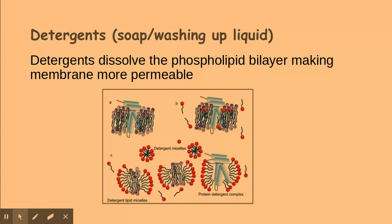Detergents are another factor that disrupts the cell surface membrane. They do this by dissolving the phospholipid bilayer and making the membrane more permeable. This is why you're encouraged to wash your hands regularly, because most microbes — for example bacteria and viruses — have a membrane in their structure. When you wash your hands with detergent or soap, it disrupts the membrane present within the bacteria or virus, meaning they'll no longer be able to work effectively. Detergents dissolve the phospholipid bilayer.